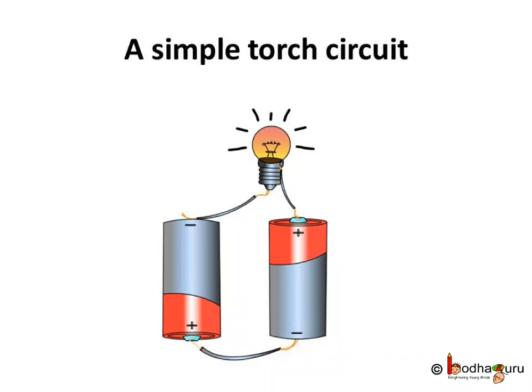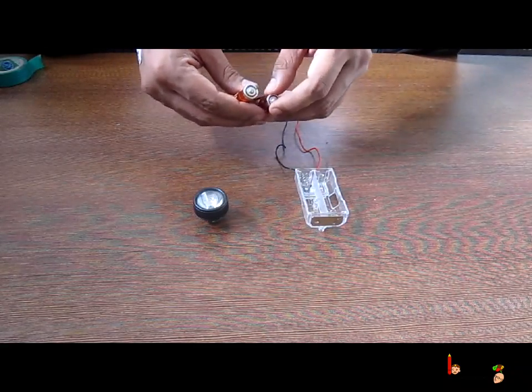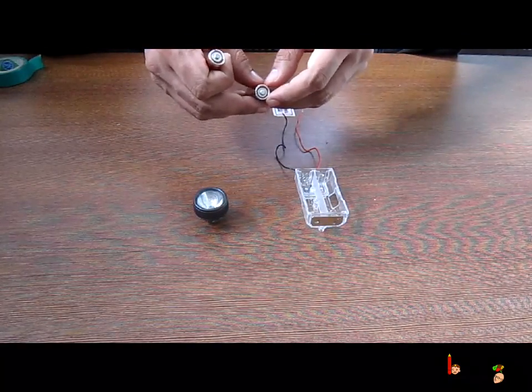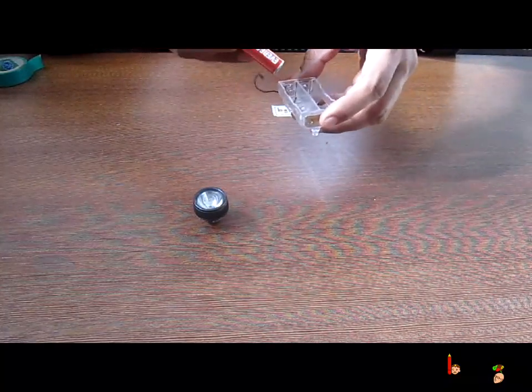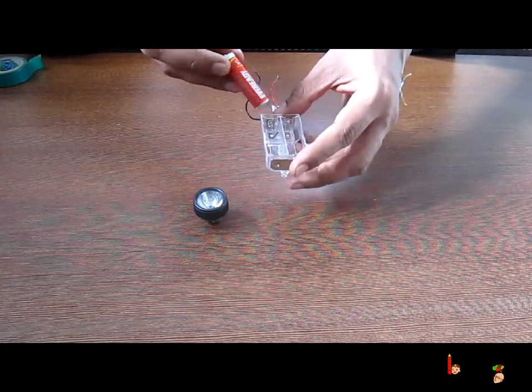Now let's make a small torch ourselves. I have taken two cells, some wires and we will make a circuit with this and try to light a bulb from the torch. Here is how the circuit will look.